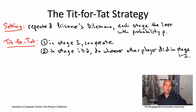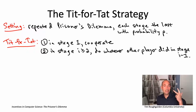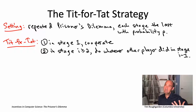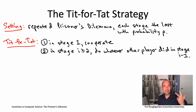In other words, the tit-for-tat strategy starts optimistically, punishes immediately, and forgives quickly. And it turns out that's a great way to play the repeated prisoner's dilemma — maybe also a pretty good strategy for life: start optimistically, punish quickly, forgive quickly.